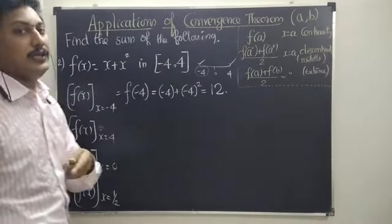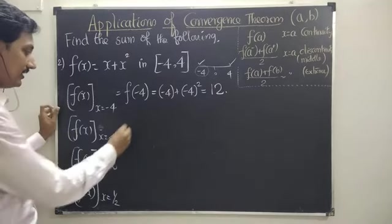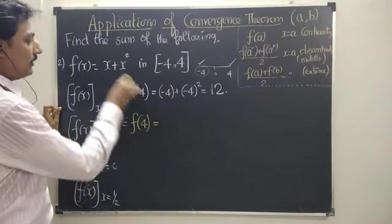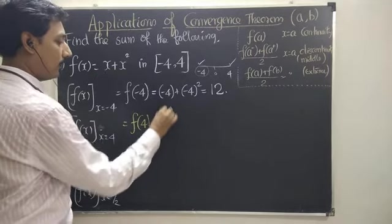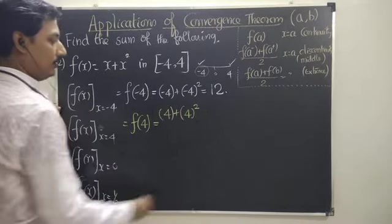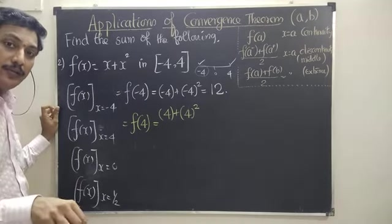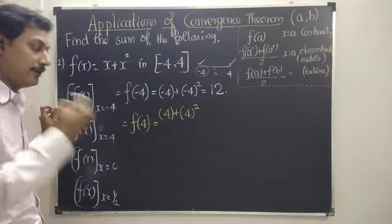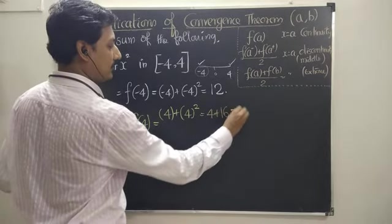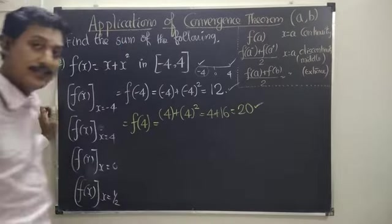The point of discontinuity may give the same answer for two extreme points, but a point of continuity is not the same — it is different. So for x equal to 4, it is f of plus 4. Substituting x equal to 4: 4 plus 4 squared equals 4 plus 16, which is 20. See the difference!